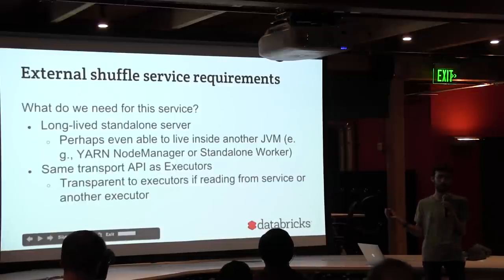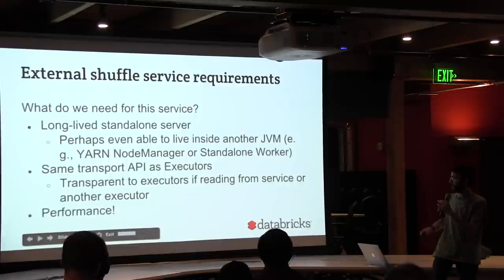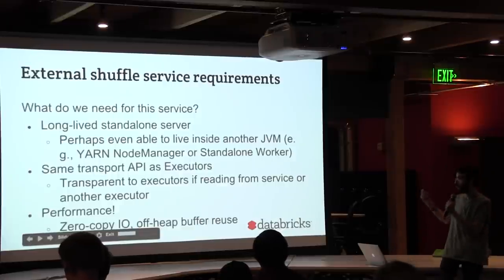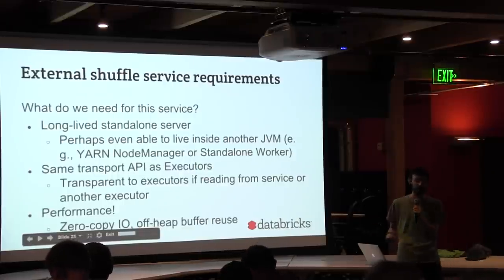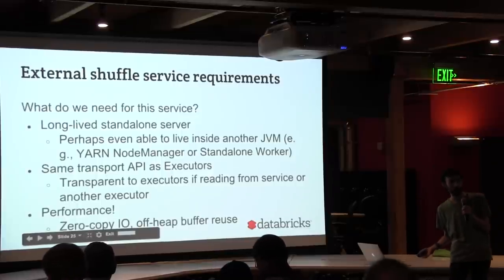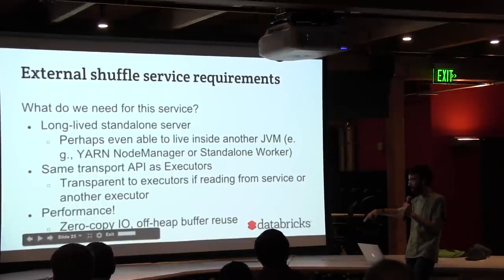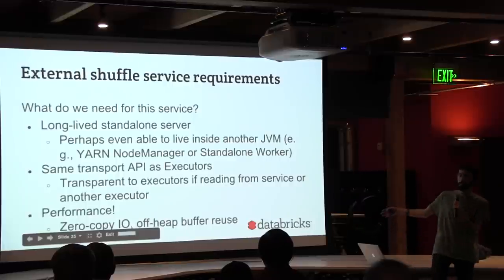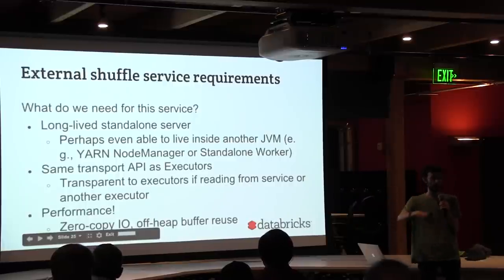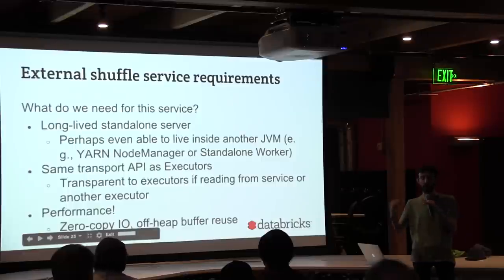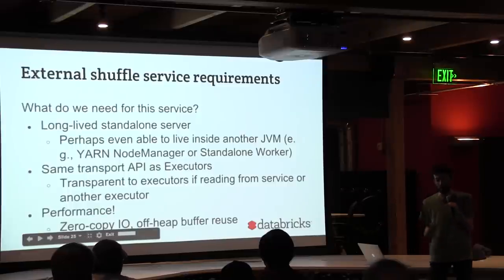This shuffle service needs to have the same transport-level API as the existing shuffle. Whether you're reading from another executor or from the shuffle service, it should be transparent — just an IP and a port, and you ask it for shuffle files. Two important performance features are zero-copy IO, where you copy directly from a file to the IO channel over the network, and off-heap buffer reuse, so there's no garbage collection.